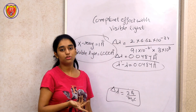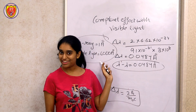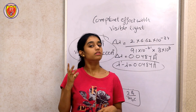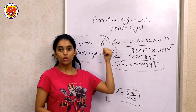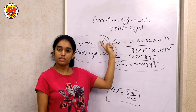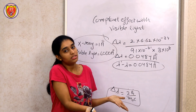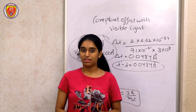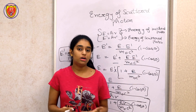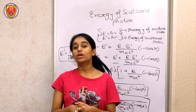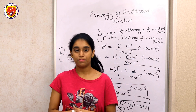This change in wavelength is almost negligible compared to the visible light wavelength of 6000 Angstrom. So we know that the Compton effect with visible light is not possible — we cannot observe the Compton effect with visible light. That is why Compton scattering is not observable with visible light. With this, we are done. If you liked the video, please like and subscribe to the channel.